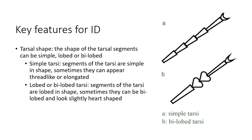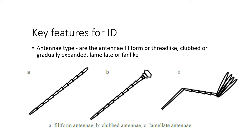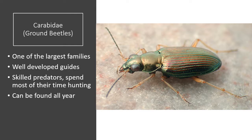The tarsal shape is also important. The shape of the tarsal segments can be simple, lobed, or bilobed. Simple tarsi are very simple in shape, and sometimes they can appear thread-like or elongated. Lobed or bilobed tarsi are segments that are lobed and shaped. Bilobed tarsi can look slightly like a heart. The antennae type can also vary between different beetle families. Filiform antennae are thread-like. They can be clubbed, gradually expanded at the end, or very fan-like.